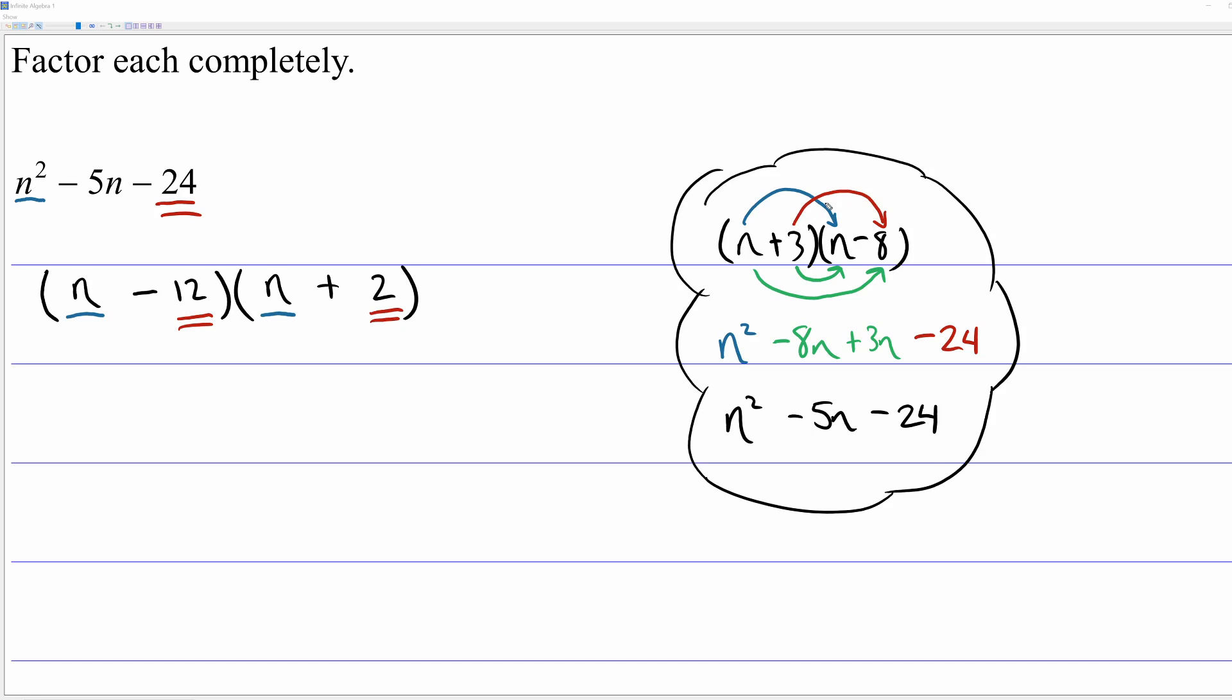Notice n times n is this top arrow. 3 times negative 8, which we know is correct, is the red arrow. And that's how I've color-coded these blanks. But I haven't considered the arrows in green, what I call the outside and the inside arrows. So we're going to have to consider those.